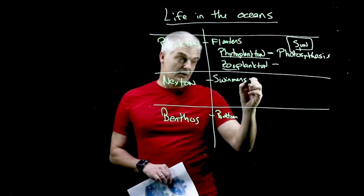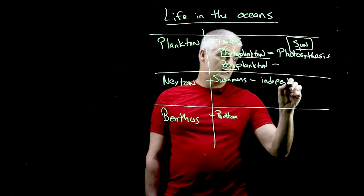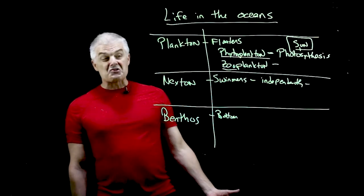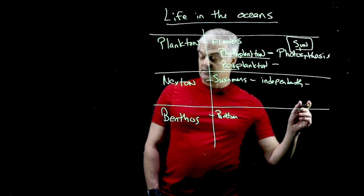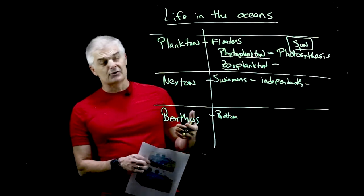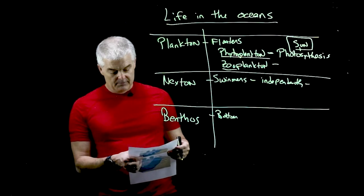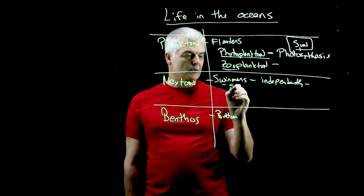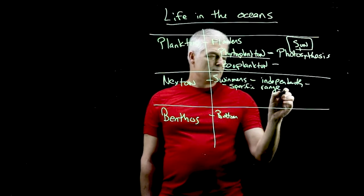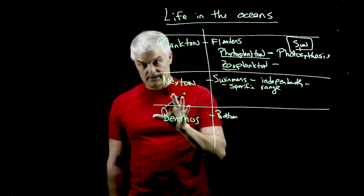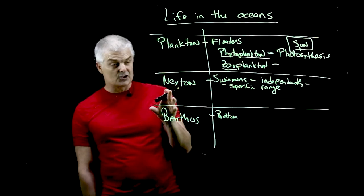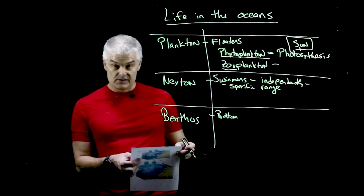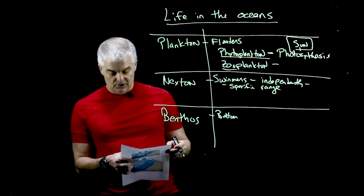The nekton are the swimmers — these are all the creatures that can swim independently: dolphins, fish, whales, jellyfish, things like that. One key point is that most of these creatures can only live within a specific range, usually determined by a temperature variation. They don't travel all over the world, though there are some exceptions like whale migrations.